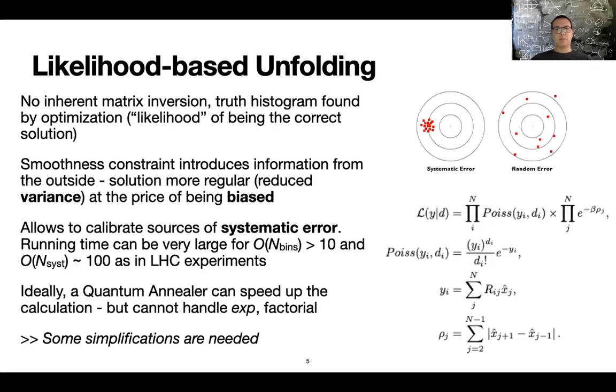So all in all, this kind of calculation is like the state of the art, but it also takes a long time. It can be up to two days to find a solution. And so the idea is that perhaps a quantum annealer can help us to speed up the calculation, but unfortunately at the moment this method can't really handle the full-fledged formula that has some exponential factorial. So some simplifications are needed, but worry not because those are not really strong assumptions.